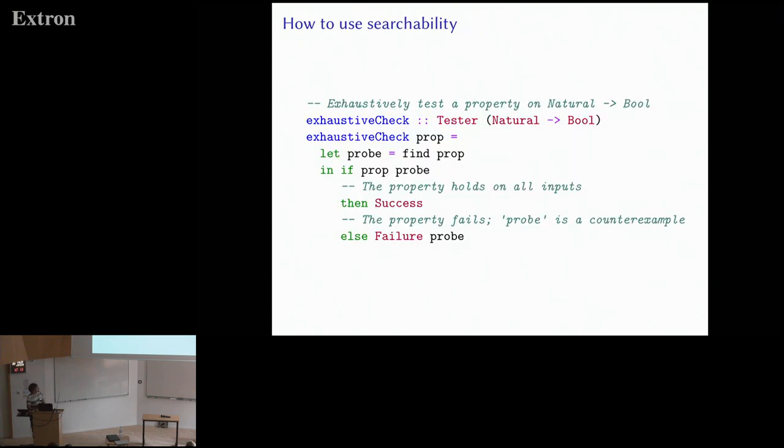So how do we use this searchability? We're gonna focus on natural to Booleans and make it work for our property testing. We define a new property tester, which is called exhaustive check, and it takes an arbitrary property and decides whether the property is valid on all inputs. Now, this is really nice.